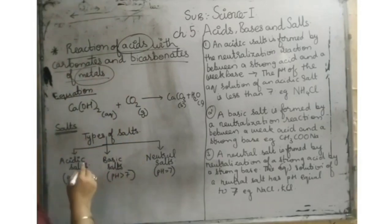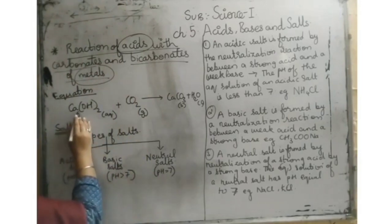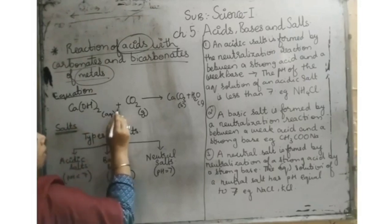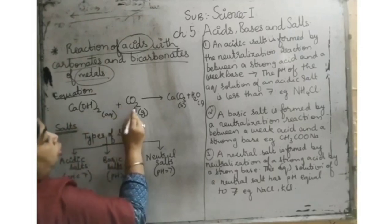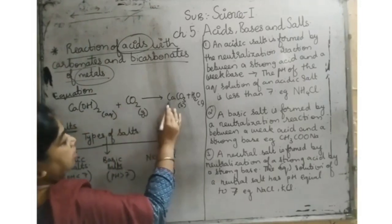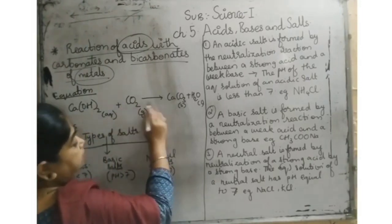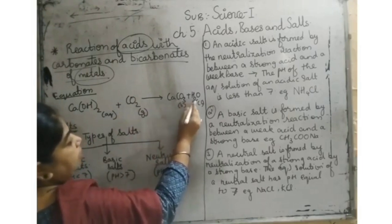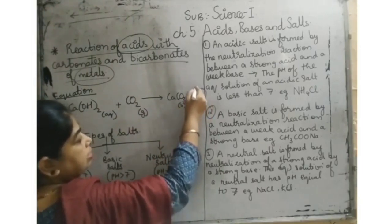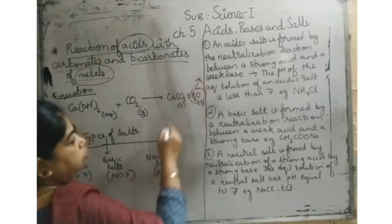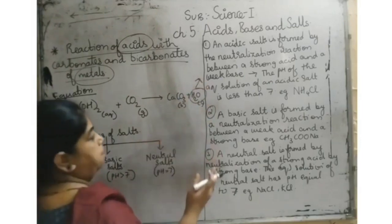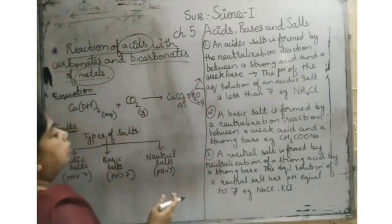There is one reaction given here: Ca(OH)₂(aq) + CO₂ gives CaCO₃ + H₂O. A water molecule is given out as a byproduct in liquid form. So we get a byproduct of the water molecule here.